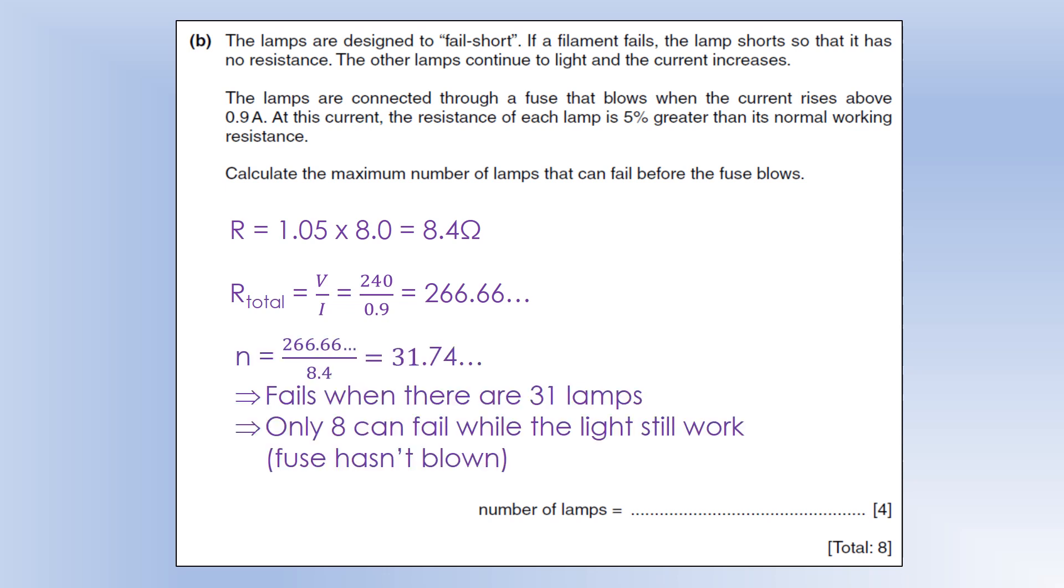What we're going to do is take that total resistance, divide by the resistance of one resistor, and that tells us that this total resistance is given to us by 31.74. What that means is the fuse is going to blow if we get N equals 31, because the fewer light bulbs we have, the bigger the current gets, so it's going to blow if it goes down to 31.